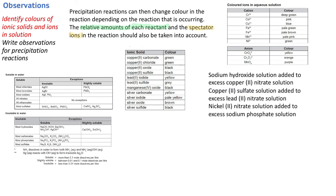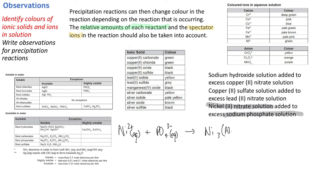Now let's do the last one: nickel(II) nitrate and sodium phosphate. Nickel nitrate solution added to excess sodium phosphate solution. We're checking if any precipitation reactions occur — looking at nickel phosphate and sodium nitrate. Sodium nitrate won't precipitate. For nickel phosphate, phosphate is in the insoluble column and nickel is not an exception. So the equation is: Ni²⁺(aq) + PO₄³⁻(aq) → Ni₃(PO₄)₂(s). Balance out the equation.